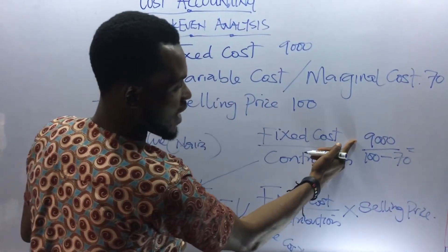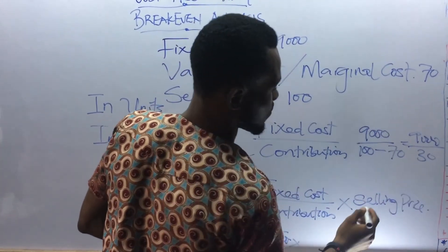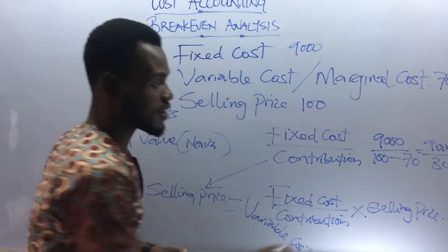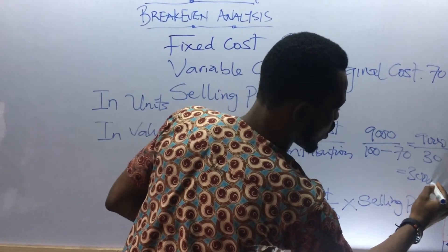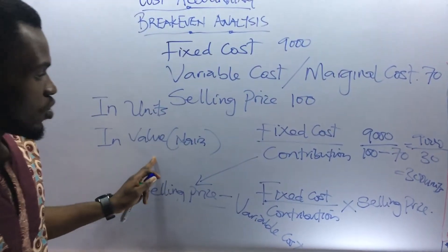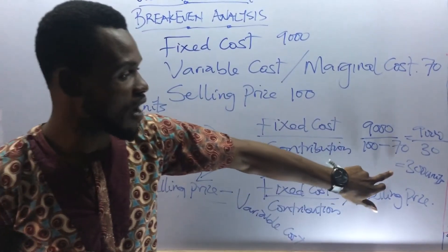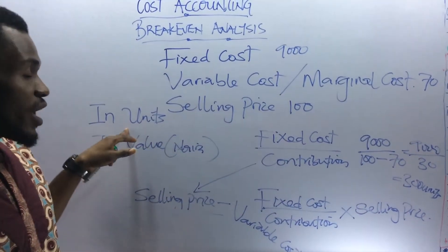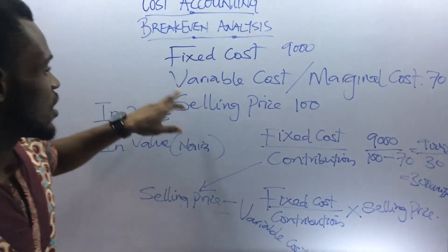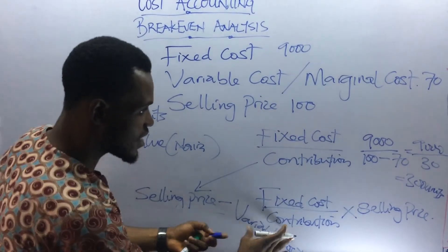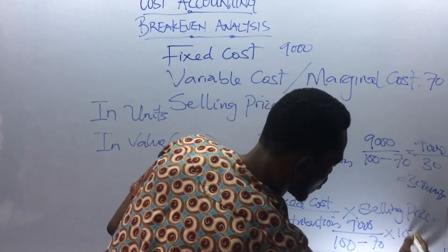So at this junction you can see $9,000 divided by $100 minus $70, which is $30. So $9,000 divided by $30 gives us 300. You've gotten your answer in units — 300 units. Now, if you are told to do the same thing to get your answer in value, it is now times the selling price. As you have 300 as the answer under break-even analysis in units, for the value in Naira you multiply by your selling price, which is $100. So we'll have $9,000 divided by ($100 minus $70) times $100.